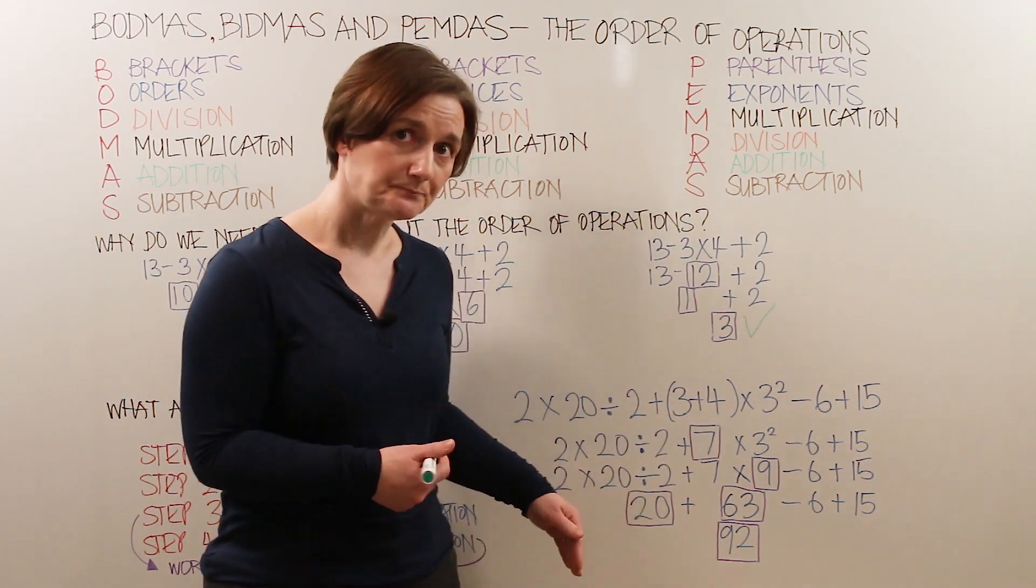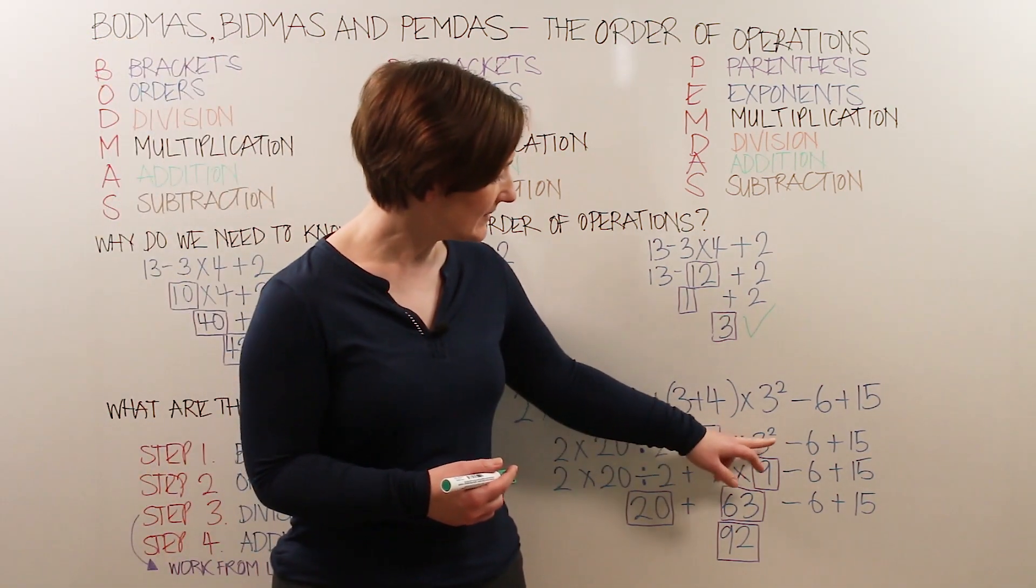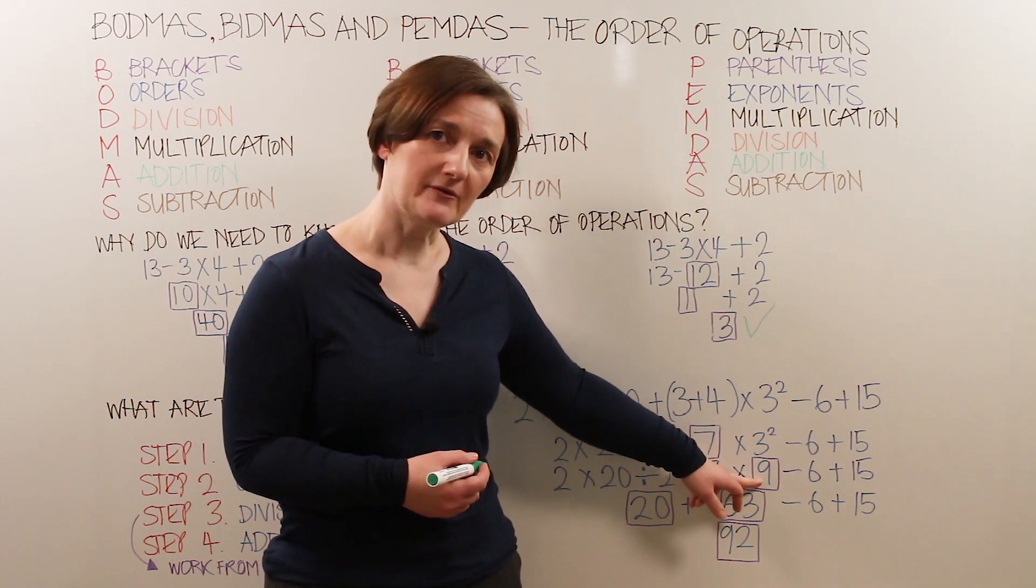Step 2 is the orders or the indices. We have here 3 squared, which gives us a single number of 9.